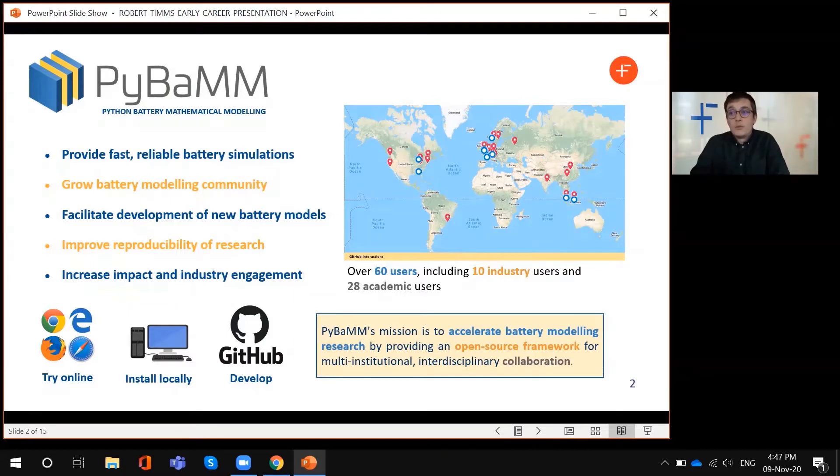These contributions might come in the form of new models or fast solvers and the people who make these contributions benefit from people using their work. This increases the impact of their work and means their code might be more robust because they've got a large user base testing it.